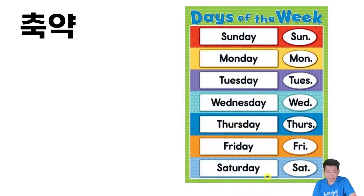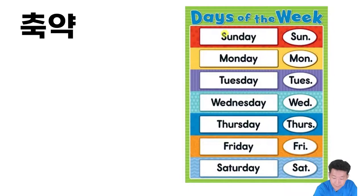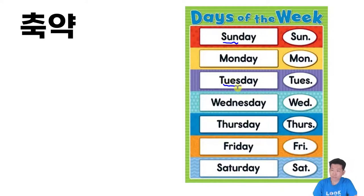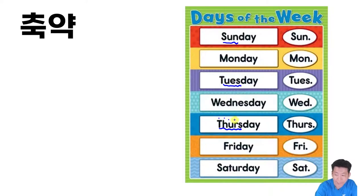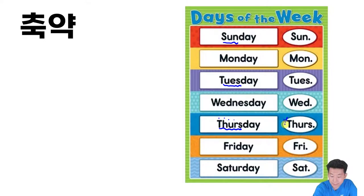그 다음에 마찬가지입니다. Monday, Tuesday, Wednesday 쭉 가서 Sunday까지 있죠? 이걸 추약형도 마찬가지로 앞에 있는 세 글자를 하면 되는데 여기 보시면 예외사항이 있죠? Tuesday 같은 경우는 TUES까지 붙이네요. Thursday 역시 THURS까지 붙이네요. 나머지는 그냥 앞에 있는 이니셜 세 가지를 따서 이렇게 하시면 되겠네요.